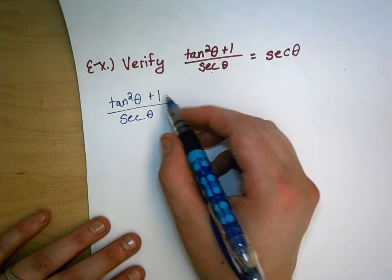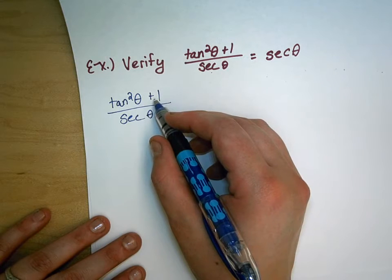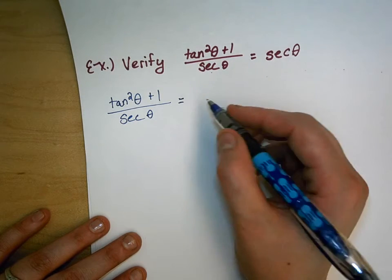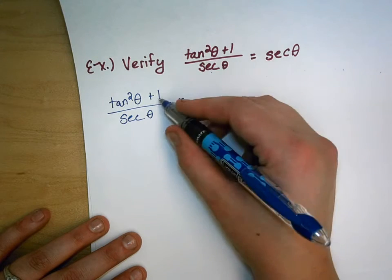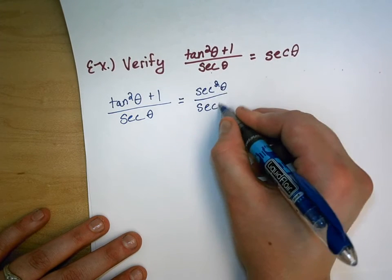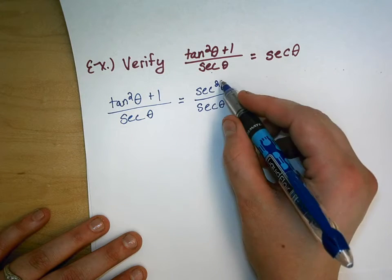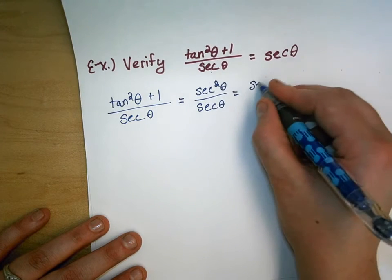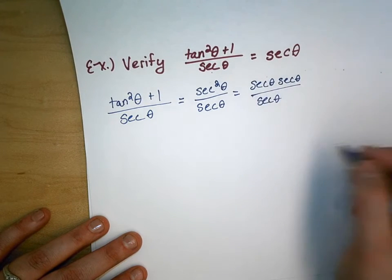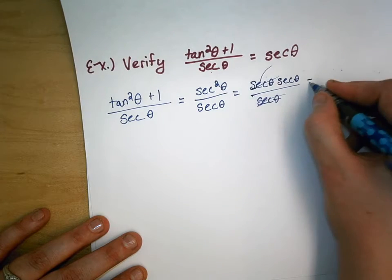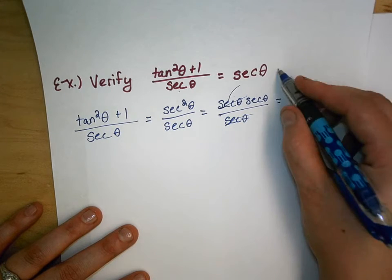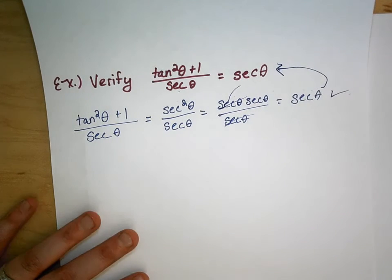Now I know that tan squared theta plus 1 — seeing that 1 and a square reminds me of Pythagorean identities. So looking at the identity sheet under Pythagorean, I see that tan squared theta plus 1 equals secant squared theta, so I get secant squared theta over secant theta. I can cancel out one of these secants — that's the same as writing secant theta times secant theta — and what I get is just secant theta, which is what I wanted in the first place.